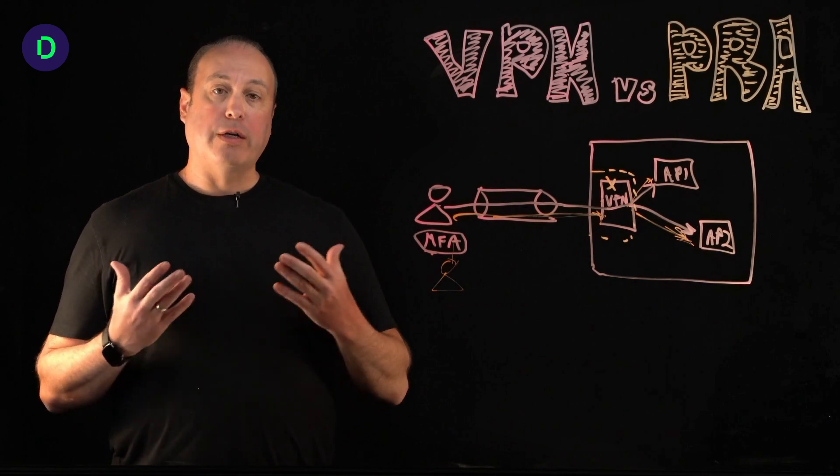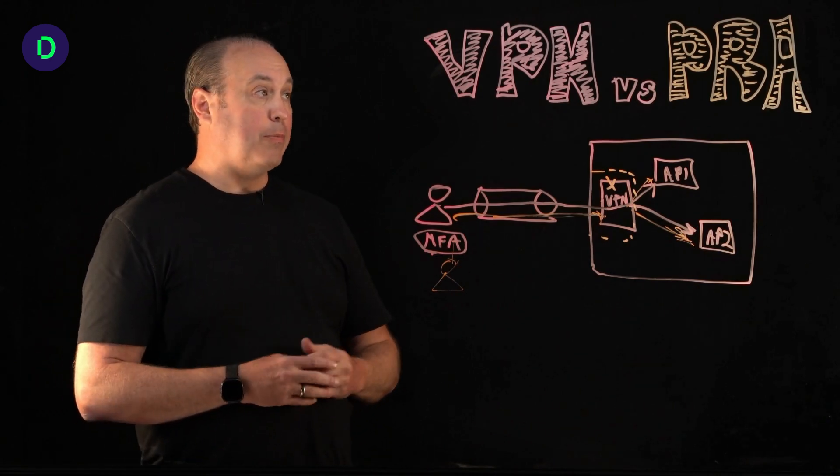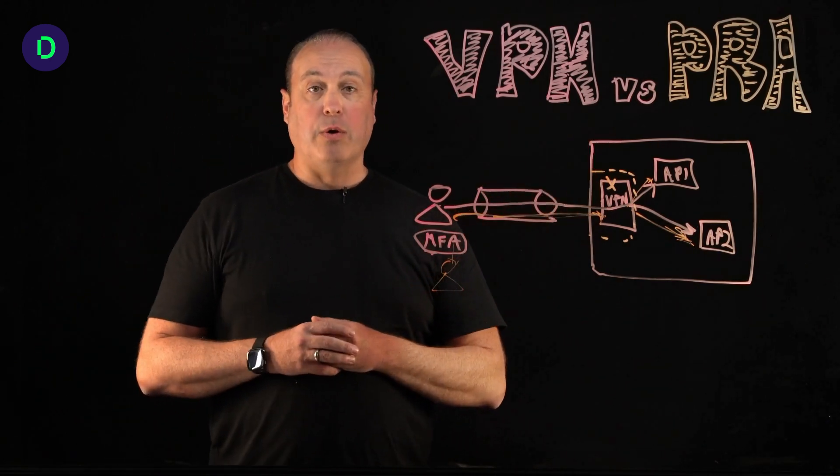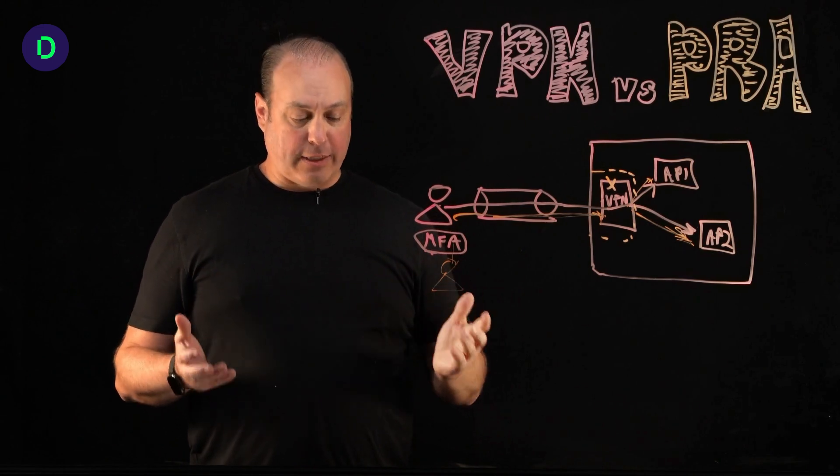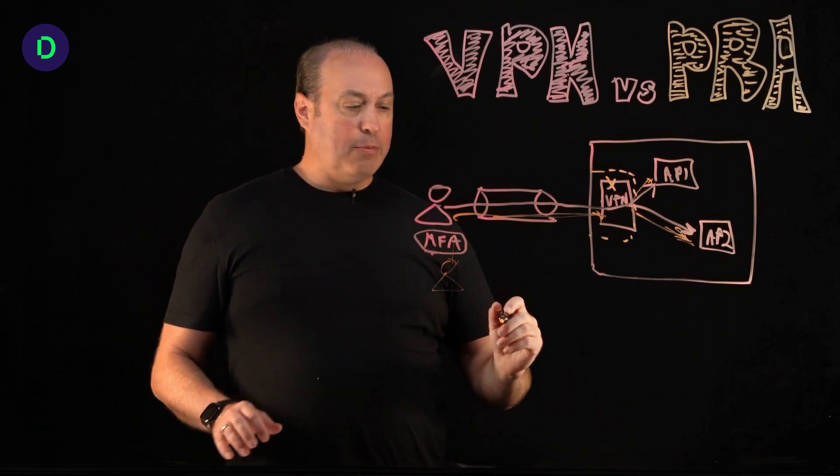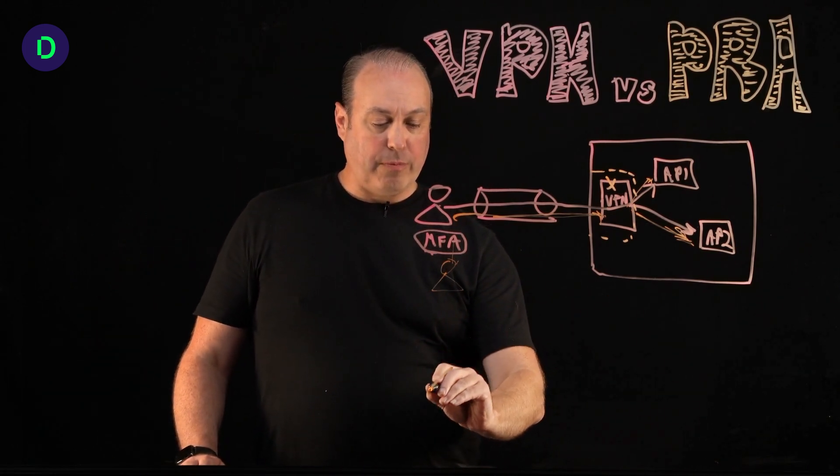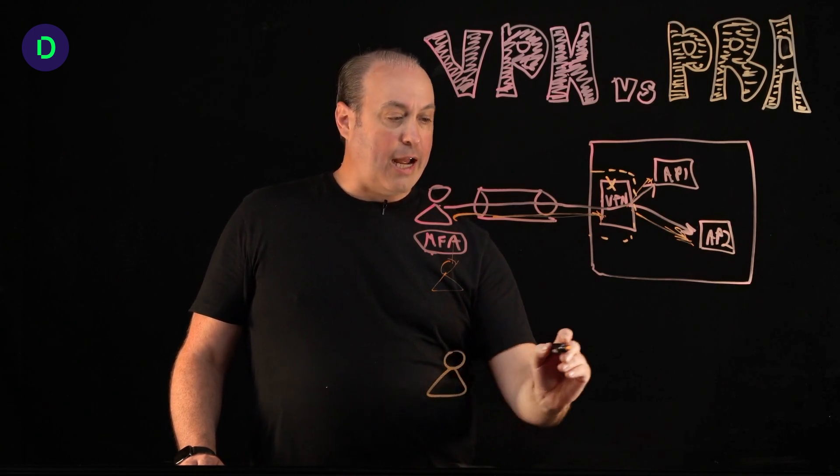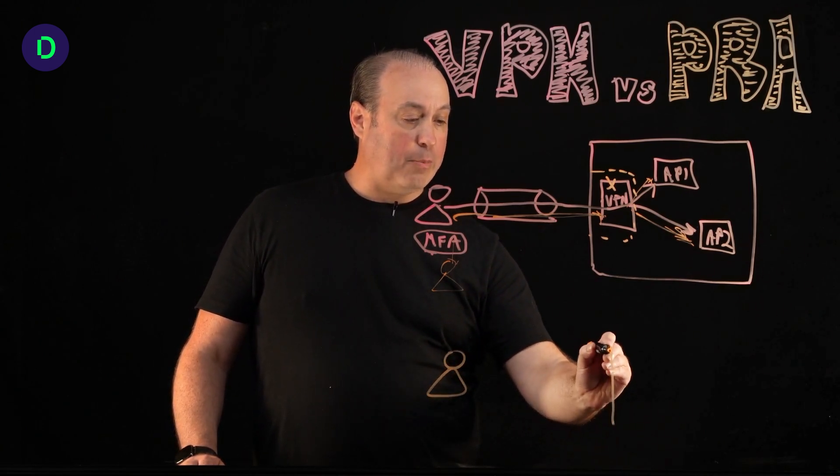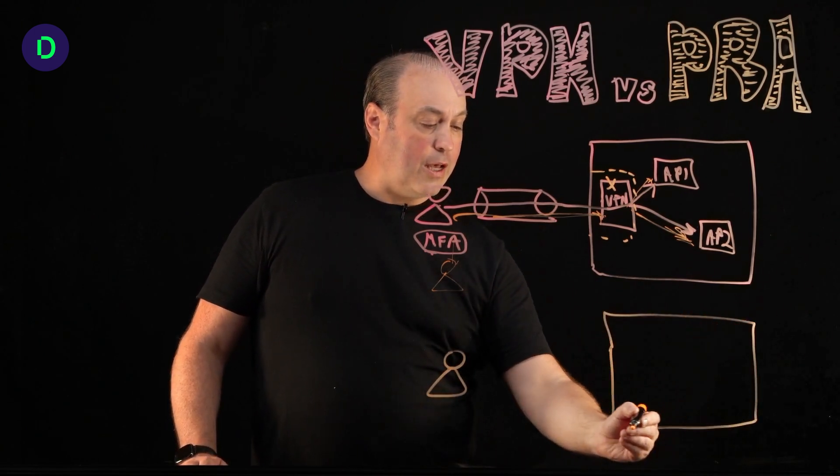Now, a better approach that organizations are discovering is something like Delinea is offering with our industry-leading Privileged Remote Access, or PRA. Now, in this scenario, same thing applies, right? You have your user, and the user needs to get access to their target applications here. This is the enterprise.